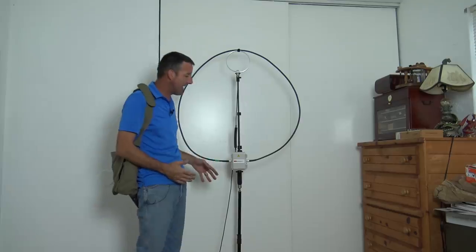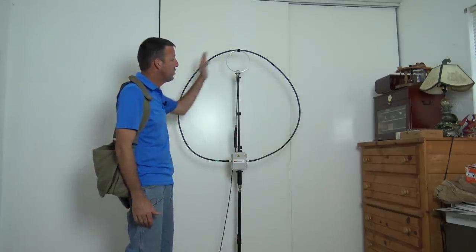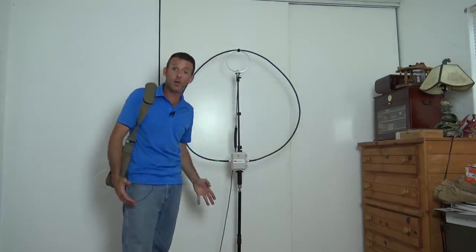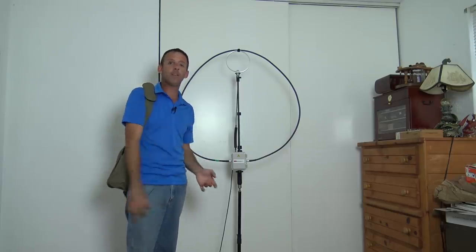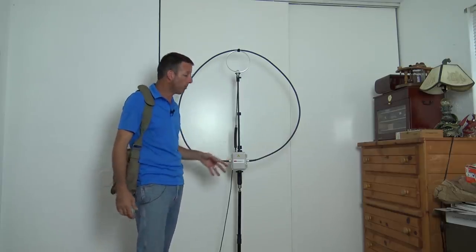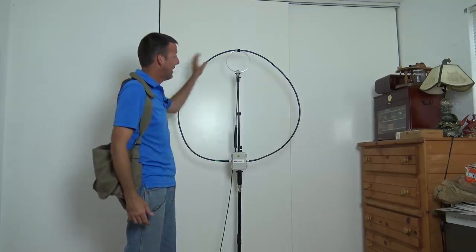We're checking out today the Chameleon Antennas P-Loop 2.0, the CHA P-Loop. You have the F-Loop, you have the P-Loop. We're checking out the P-Loop today. A portable magnetic loop antenna, not so big.